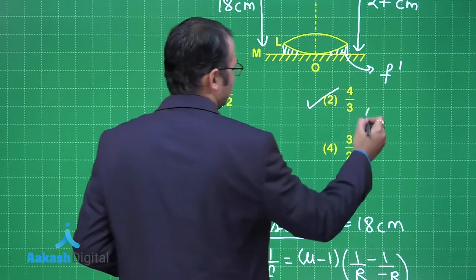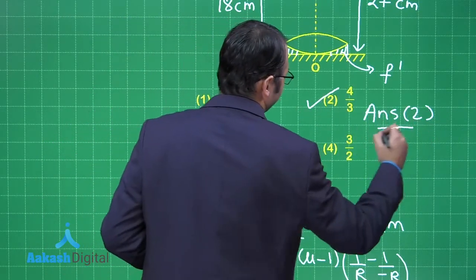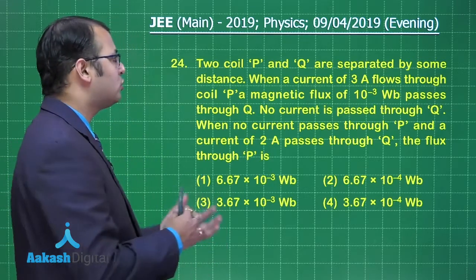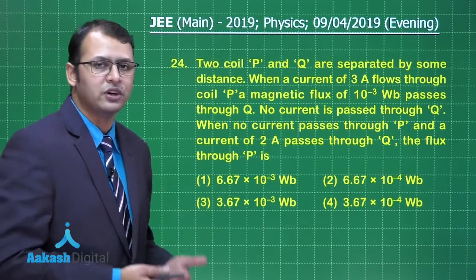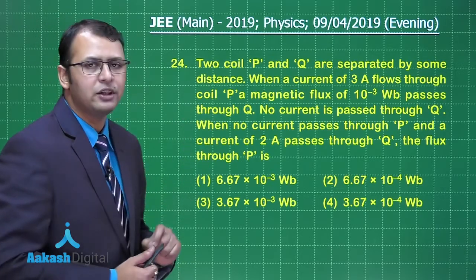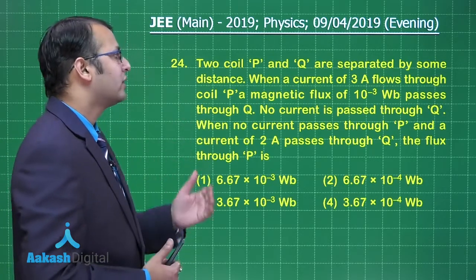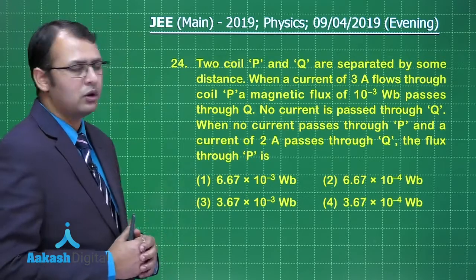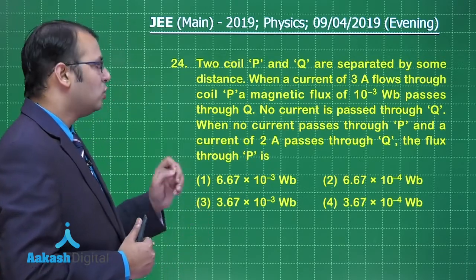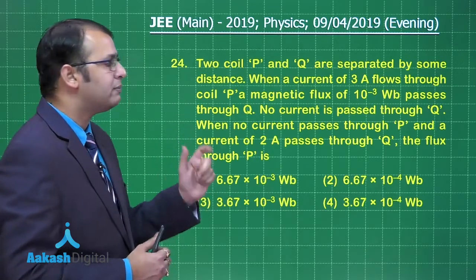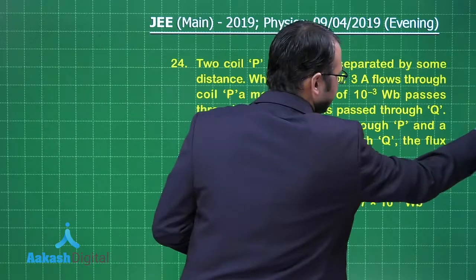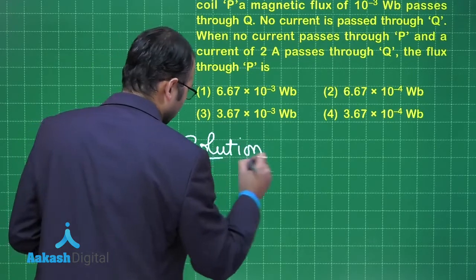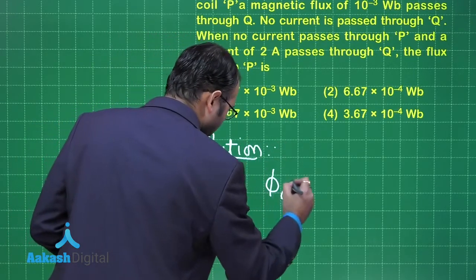Among the four options given, option number 2 is the right answer to this question. Now let's move on to question number 24, which belongs to electromagnetism from the chapter magnetic field due to current. Two coils P and Q are separated by some distance. When a current of 3 ampere flows through coil P, a magnetic flux of 10⁻³ Weber passes through Q.